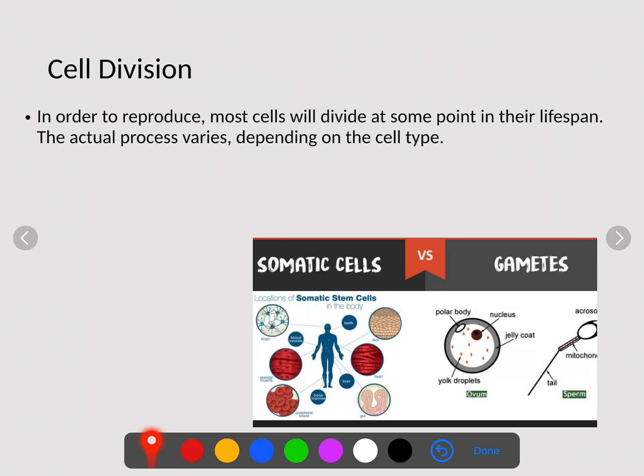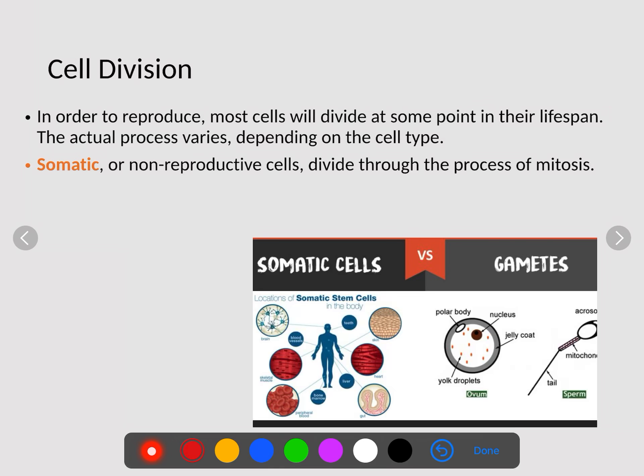In order to reproduce, most cells will divide at some point in their lifespan. The actual process varies depending on the cell type. We have two types of cells. We have somatic cells, which are non-reproductive cells — things like brain cells, our skeleton, muscles, blood cells, cells in our gut or intestines, even skin cells. These are just cells that are replacing themselves. Somatic cells divide through a process called mitosis, making an exact copy, keeping the same number of chromosomes.